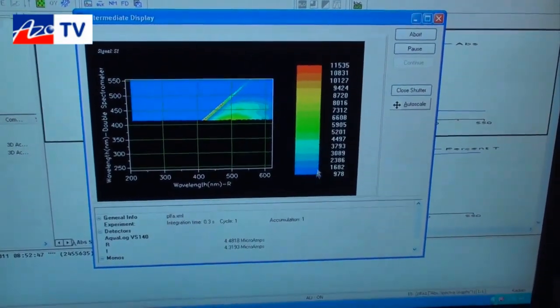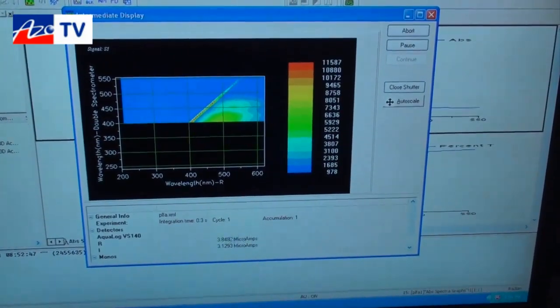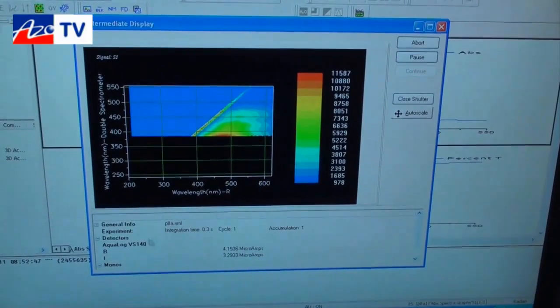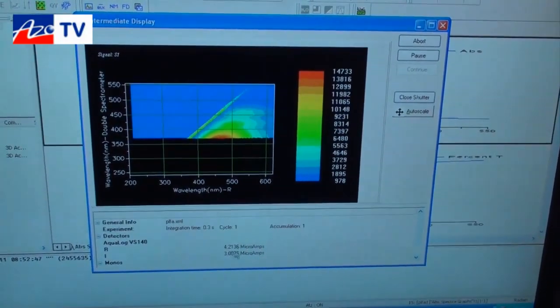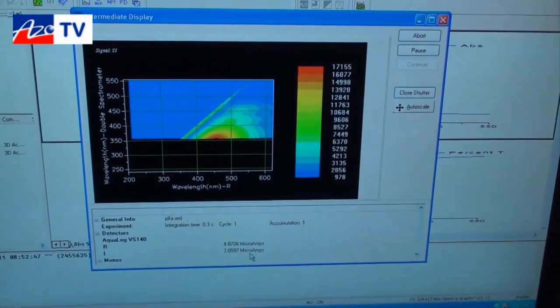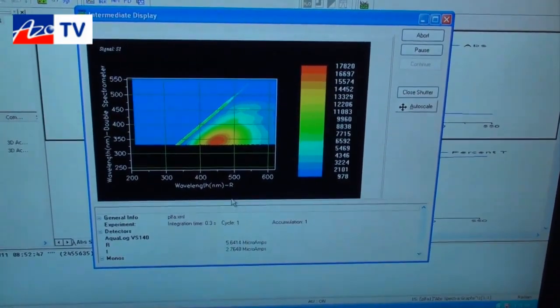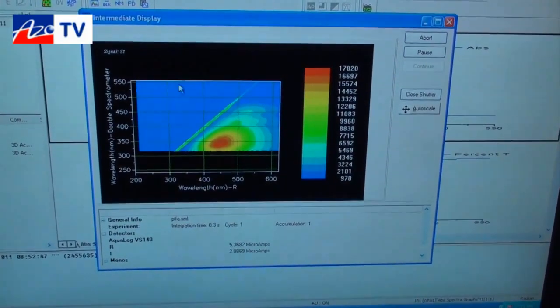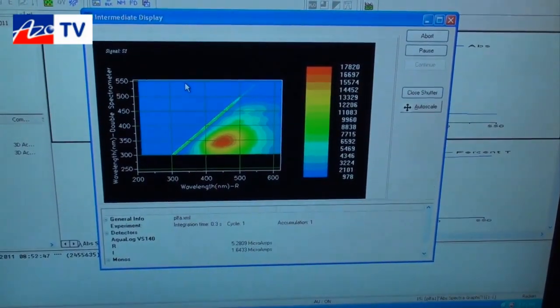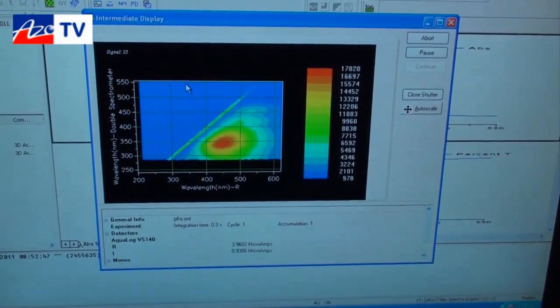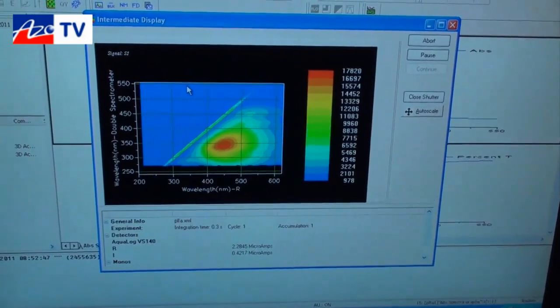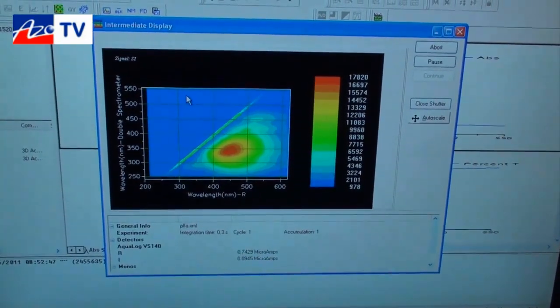This intermediate display gives you an on-running view of how the instrument is performing, what is the position of all monochrometers, spectrographs, and signal intensities as the data is being collected. Just one thing to point out is that previously with other scanning instruments, this particular measurement takes 20 to 30 minutes and up to two hours in some cases where samples are very dilute. And here we're able to do it in just a few seconds.